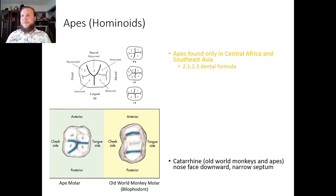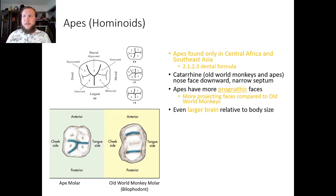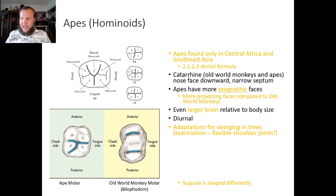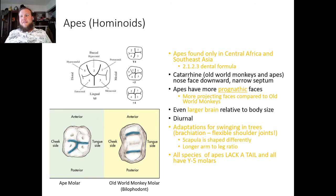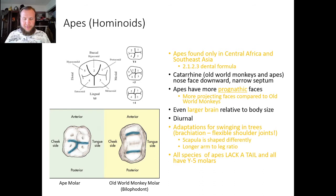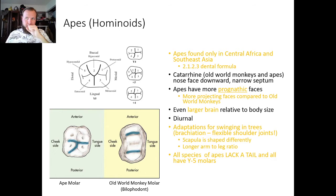Apes are found only in Central Africa and Southeast Asia. They have the 2-1-2-3 dental formula, catarrhine noses with nostrils facing downward and a narrow septum, and a more prognathic face compared to old world monkeys. They have an even larger brain size relative to body size, are diurnal, and have adaptations for swinging in trees — brachiation — including flexible shoulder joints. They also have no tail and a Y-5 molar. You can see the bilophodont molar has parallel ridges, while the ape molar has a Y-pattern with five cusps. That's the Y-5 molar — that's how you can tell the difference between apes and old world monkeys from dentition alone.